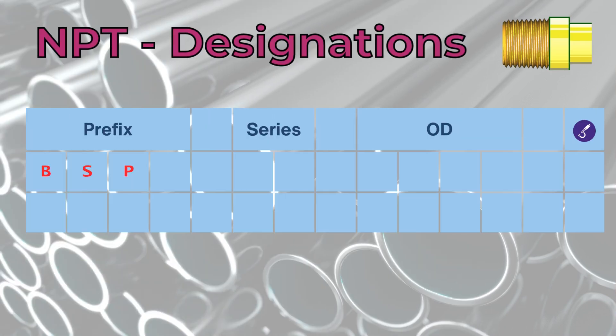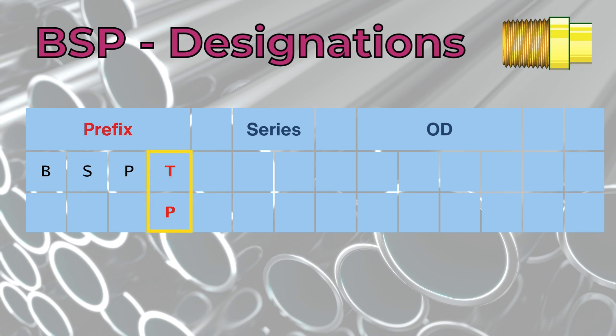Let's start by understanding its designations. It will always start with BSP followed by the letter T for tapered or P for parallel. Next, followed by a space, we have a one to two letter code specifying the series. Followed by another space, we have the nominal pipe diameter given in inch fractions. Finally, we have the letters A or B for the tolerance class, which is given only for the G series.